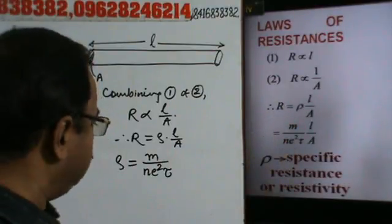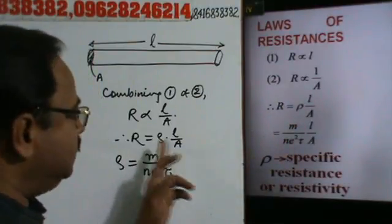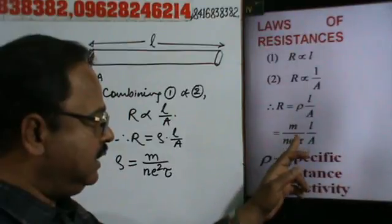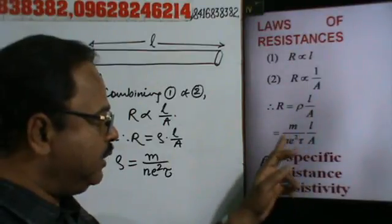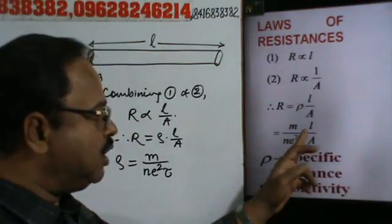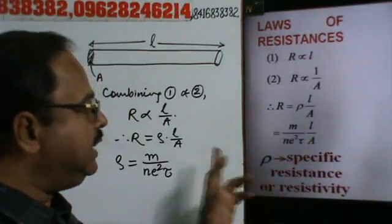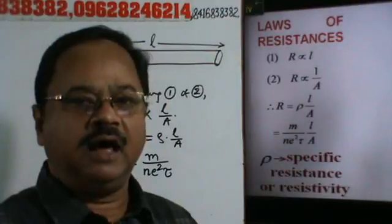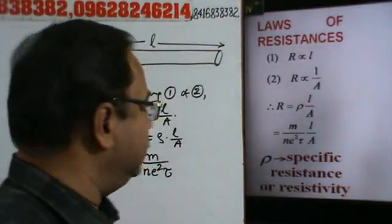Then we can have R is equal to M upon N E squared tau, into L by A. This is the law of resistance.